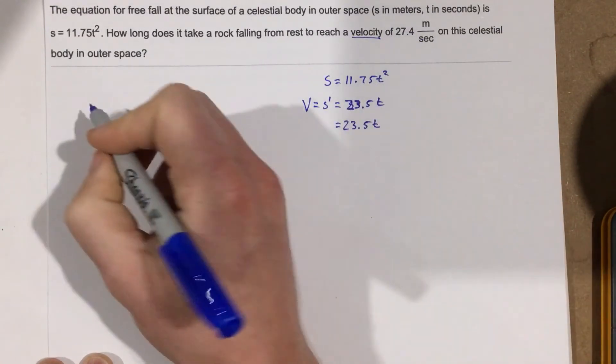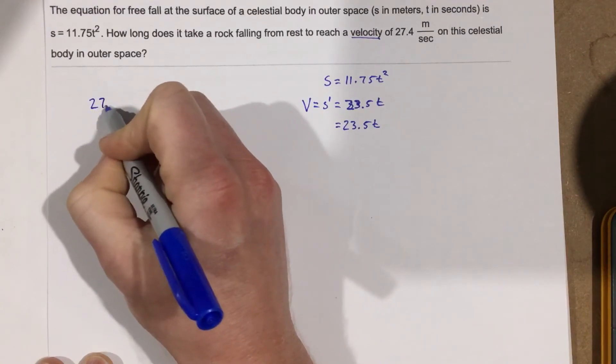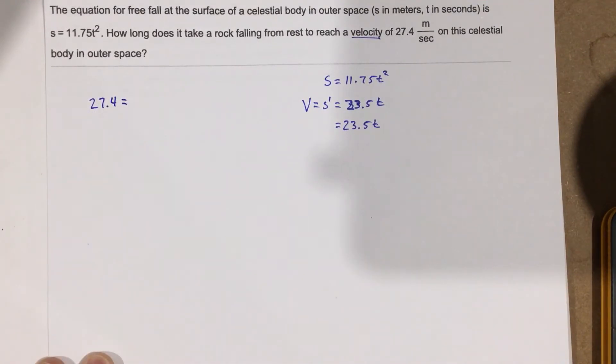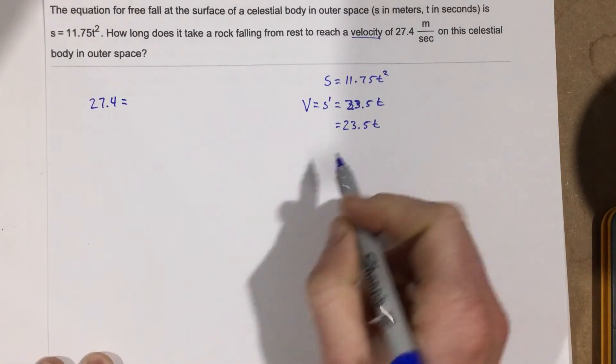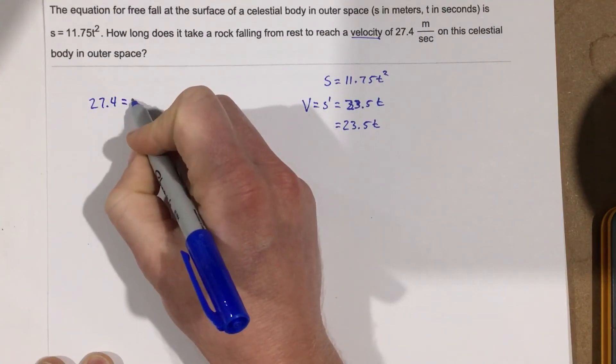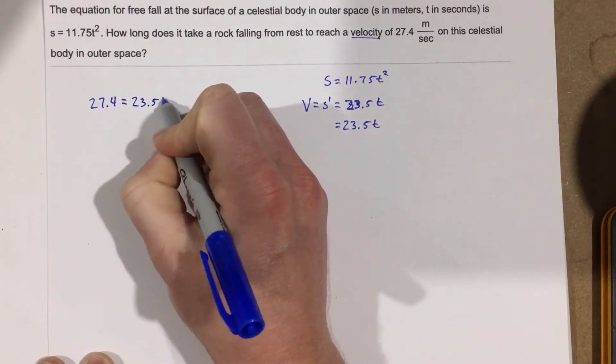So we're going to substitute 27.4 into the velocity equation, and then we're going to say that equals, so 27.4 equals 23.5 t.